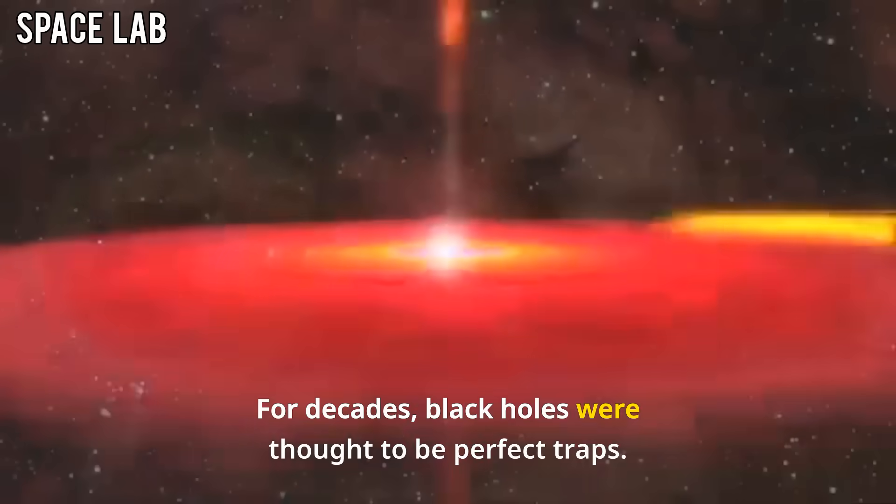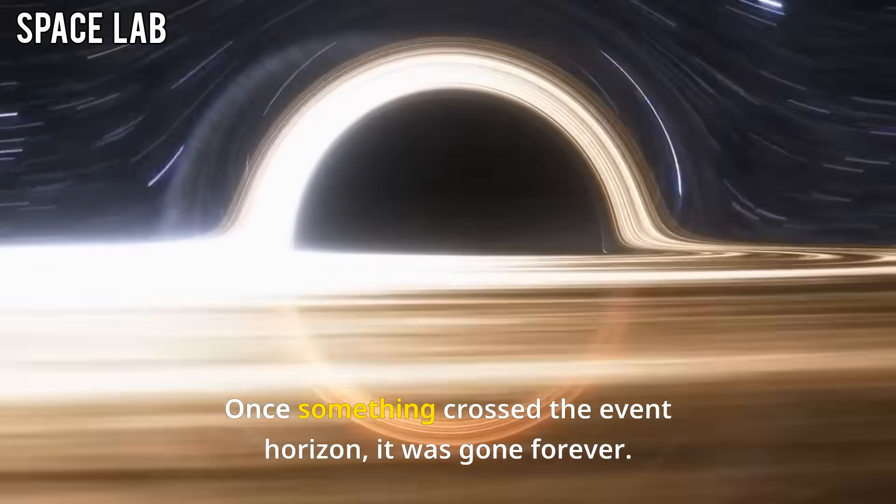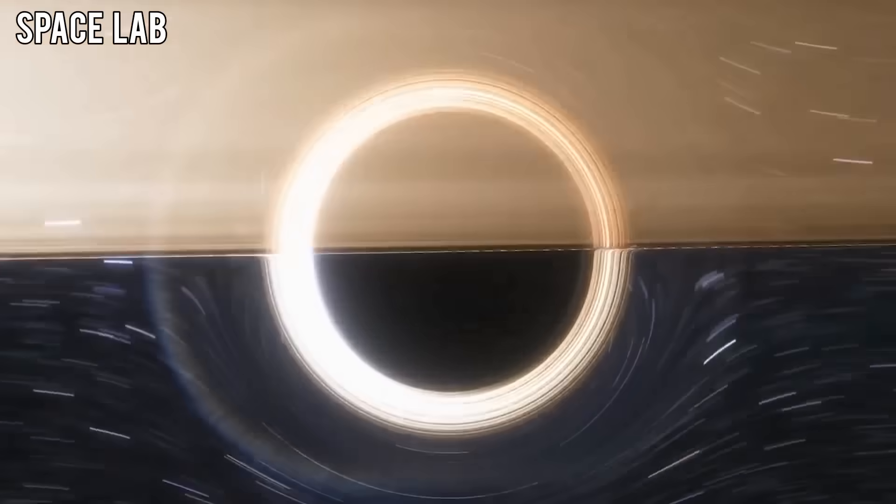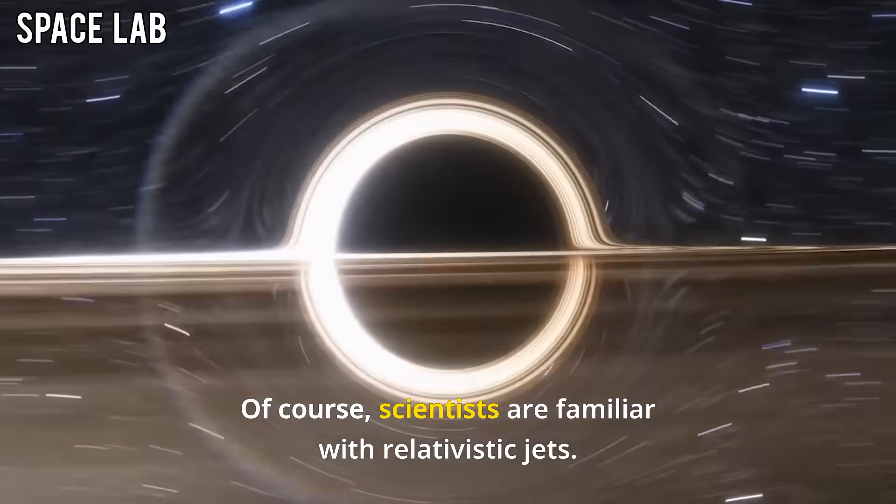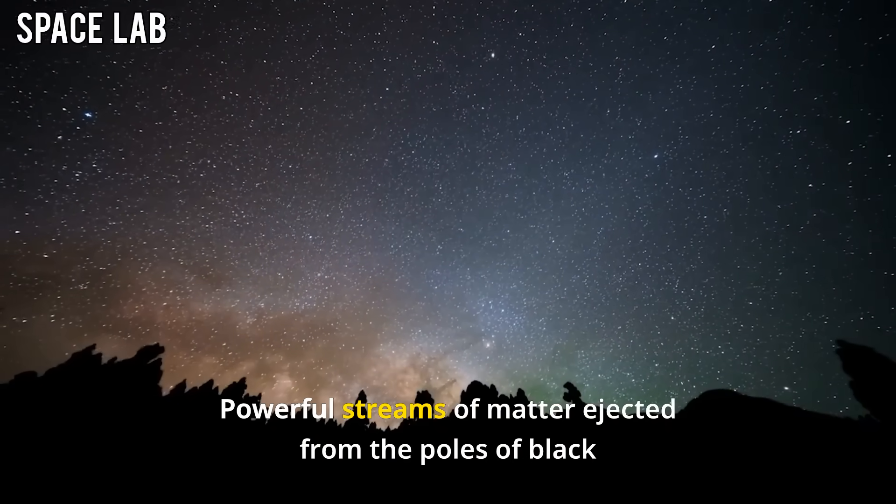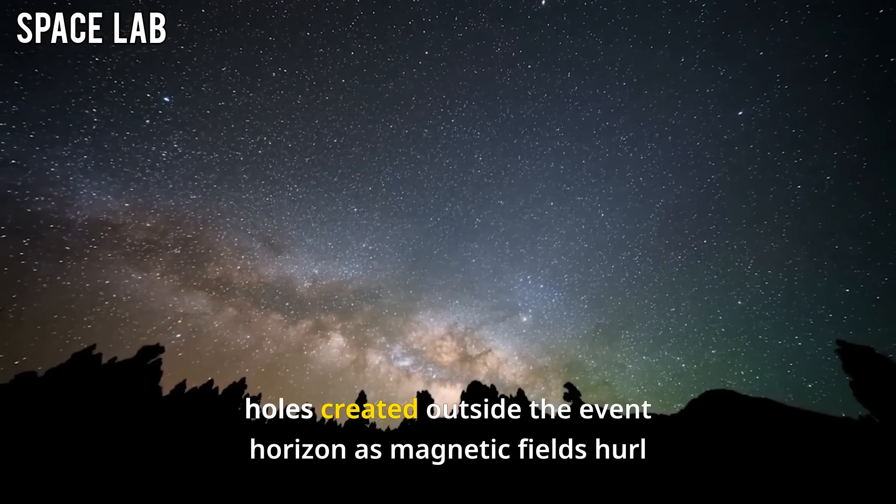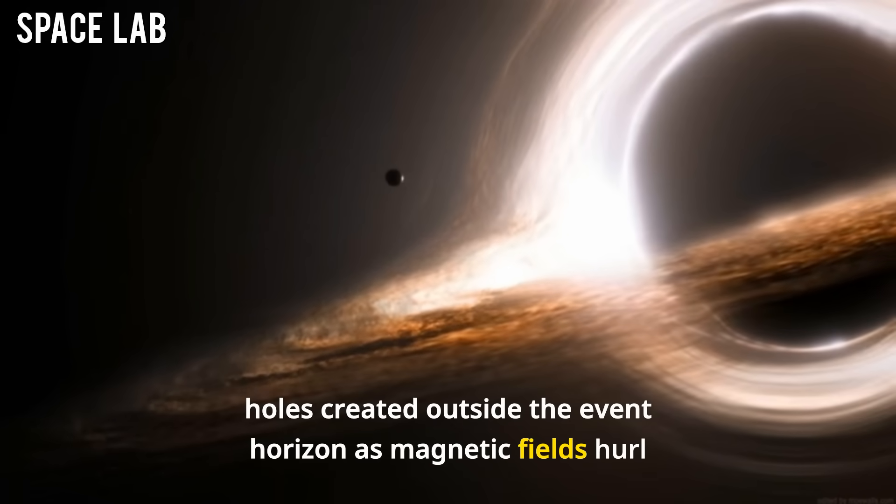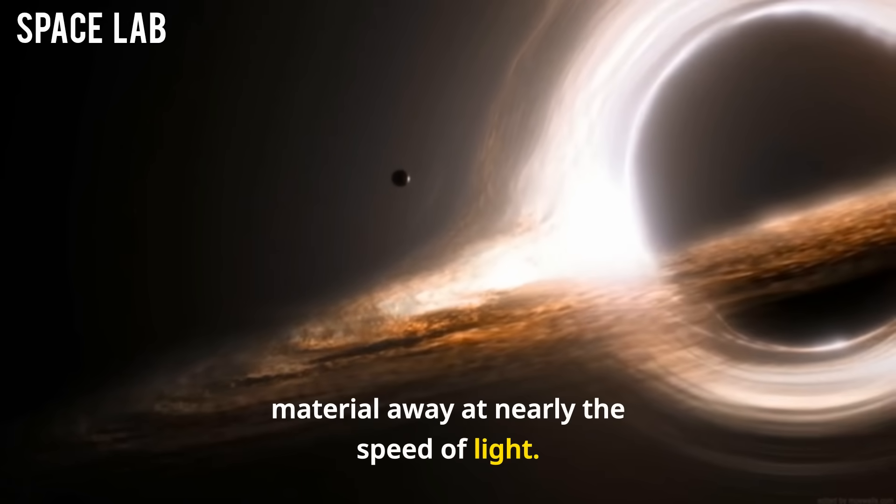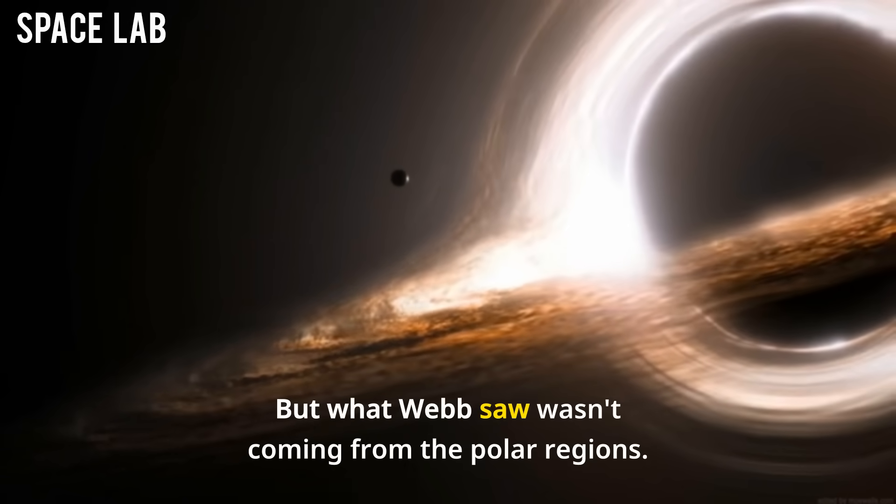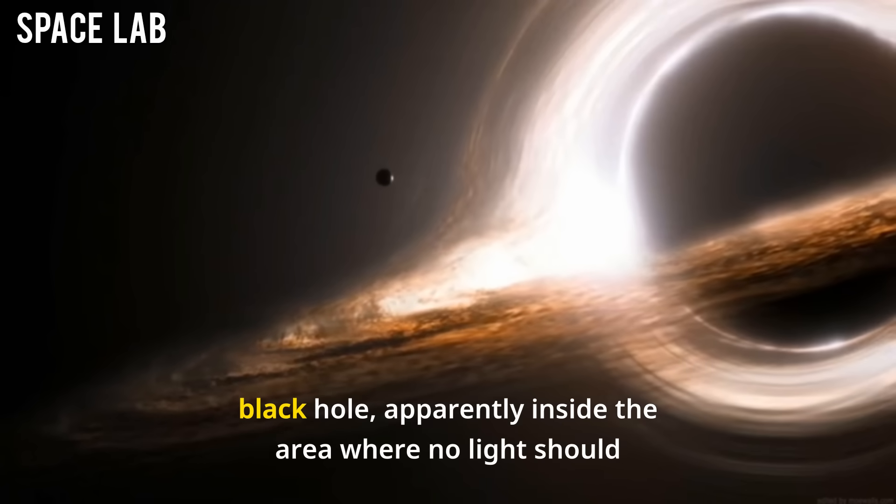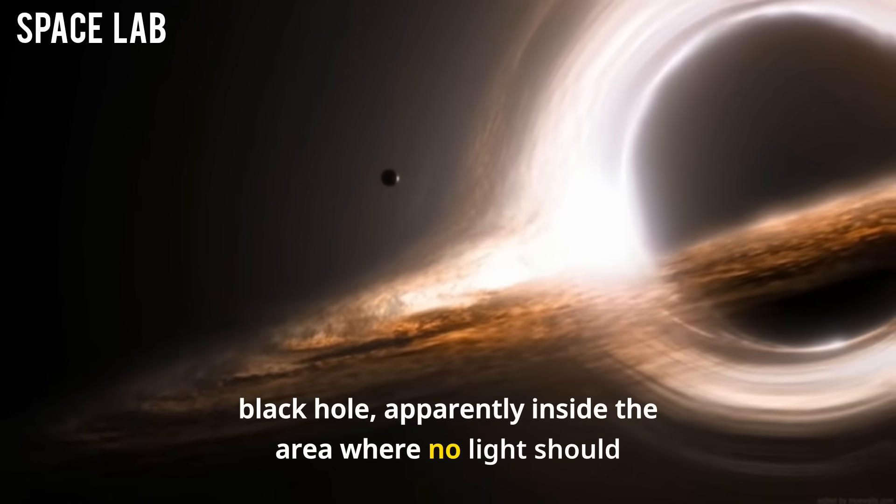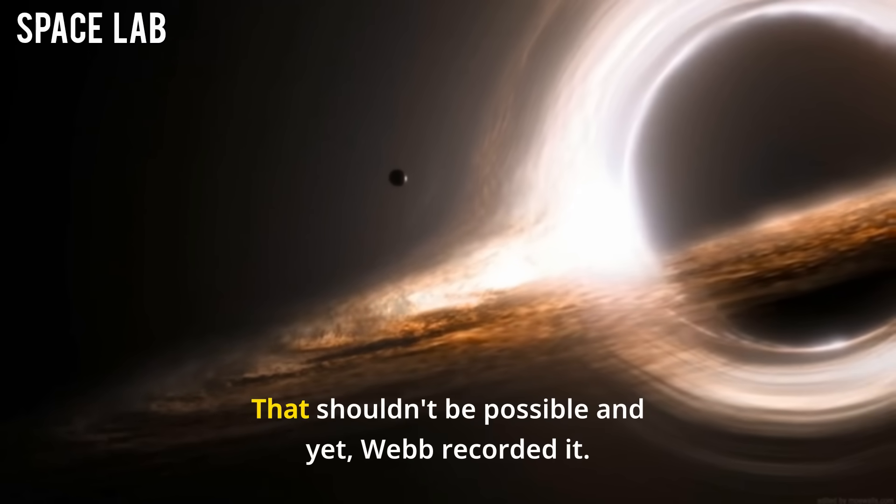For decades, black holes were thought to be perfect traps. Once something crossed the event horizon, it was gone forever. But this was different. Scientists are familiar with relativistic jets - powerful streams of matter ejected from the poles of black holes, created outside the event horizon as magnetic fields hurl material away at nearly the speed of light. But what Webb saw wasn't coming from the polar regions. This stream was coming from near the equator of the black hole, apparently inside the area where no light should escape. That shouldn't be possible. And yet, Webb recorded it.